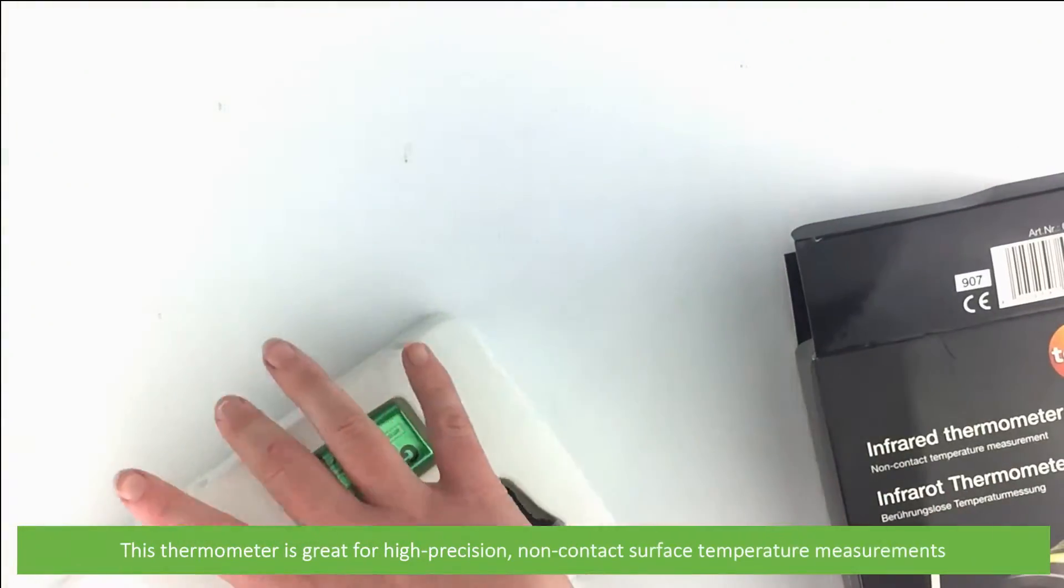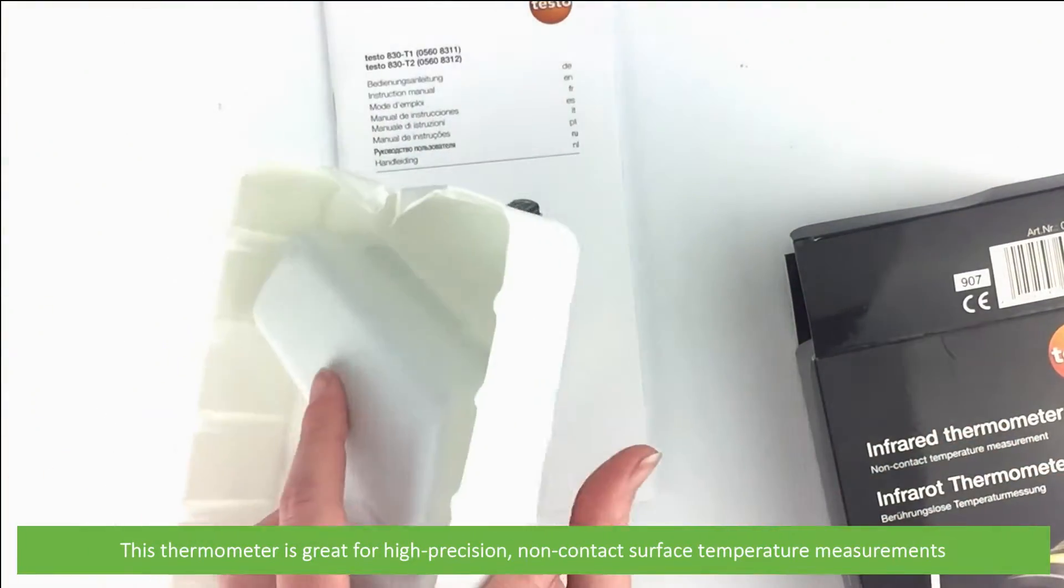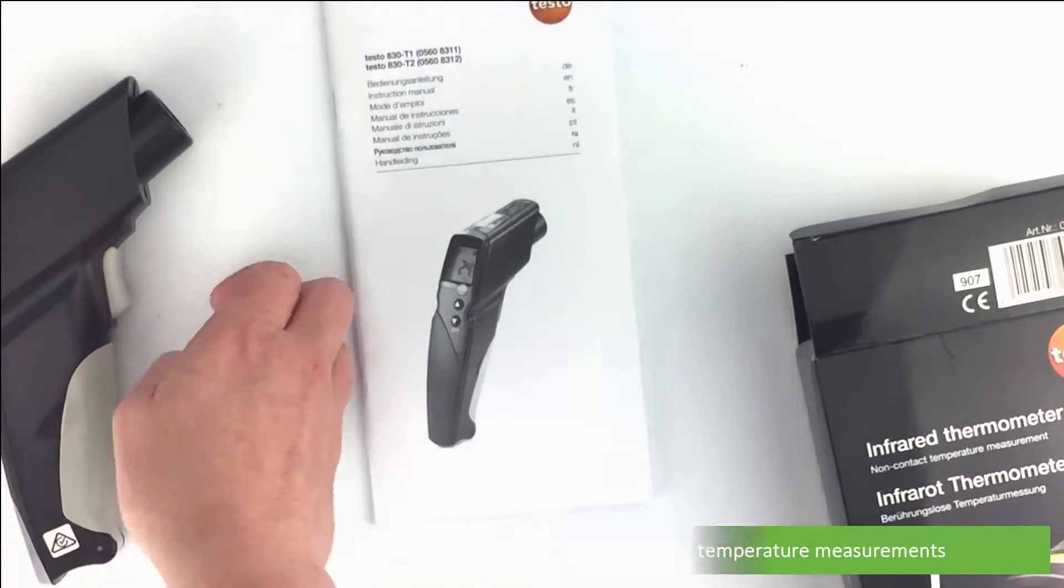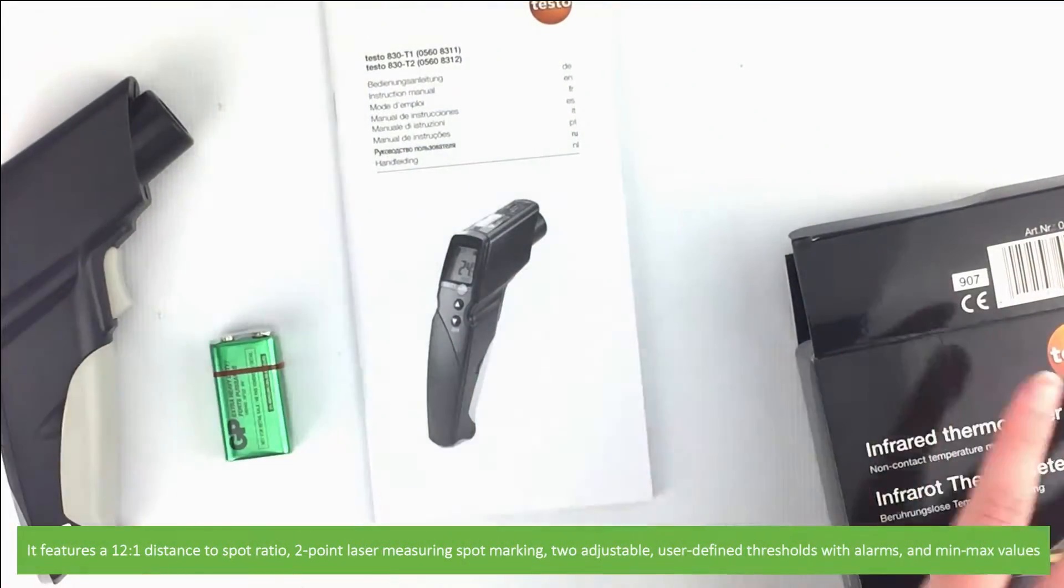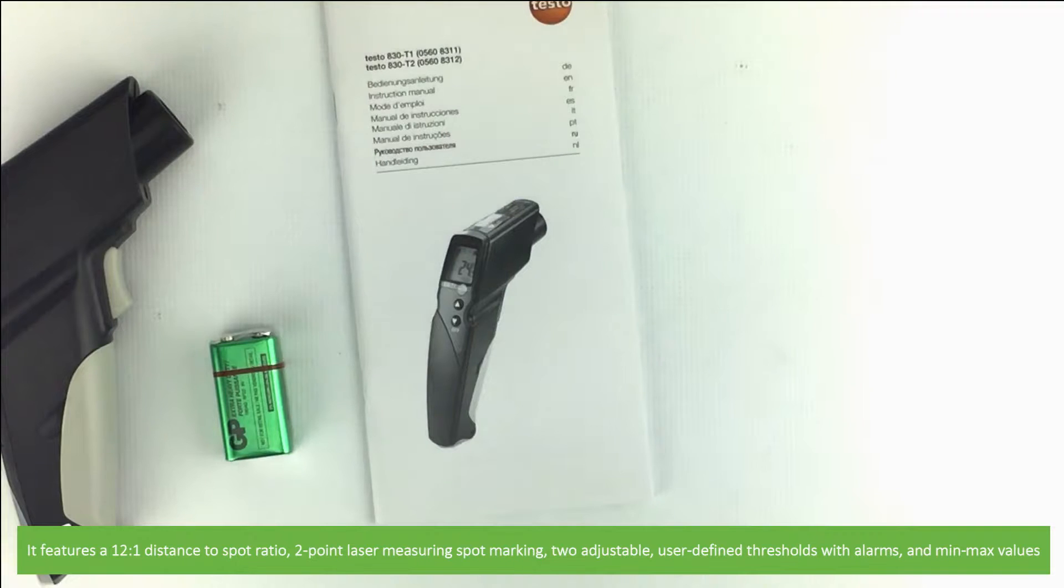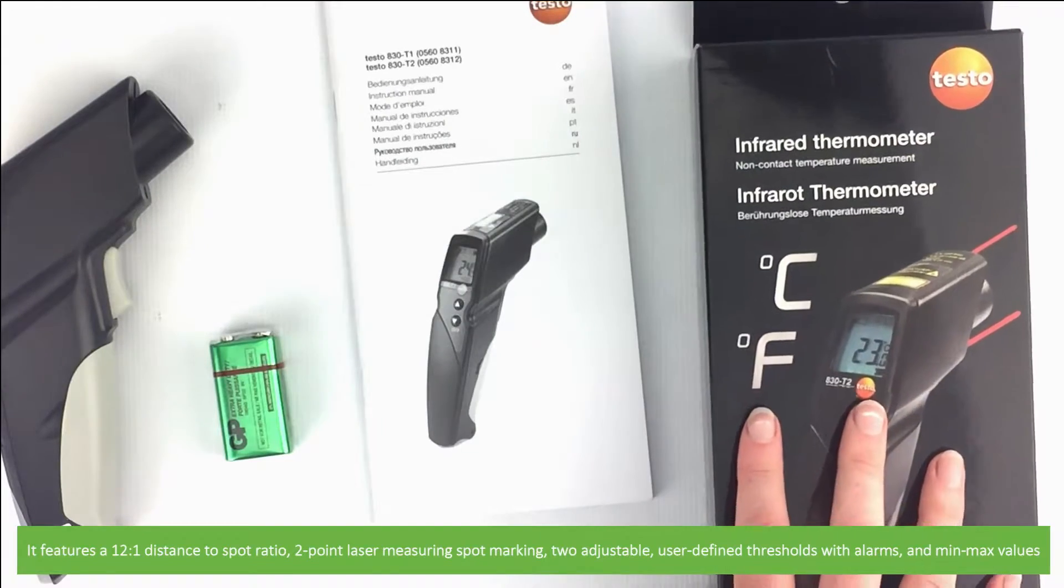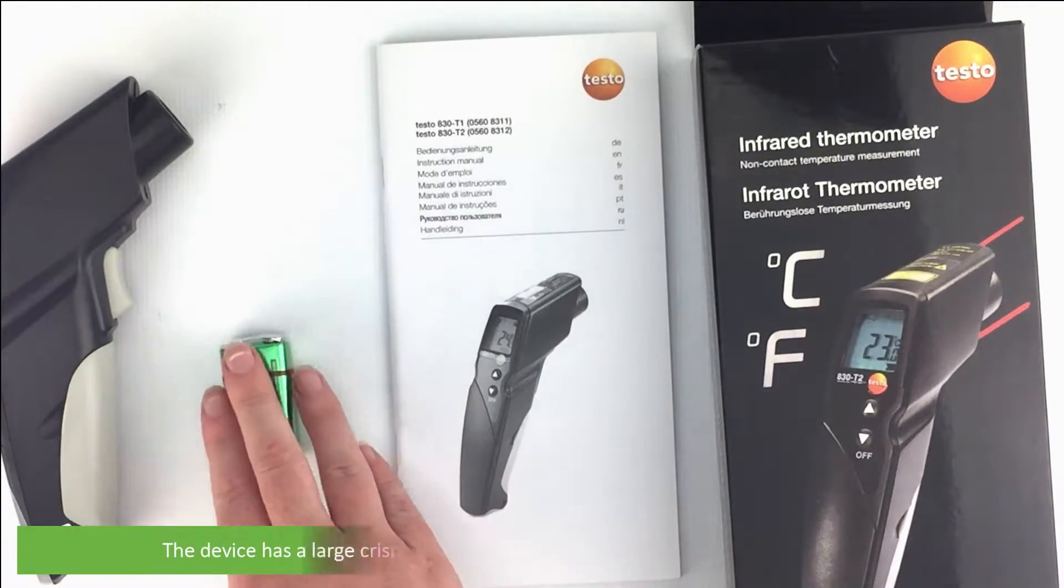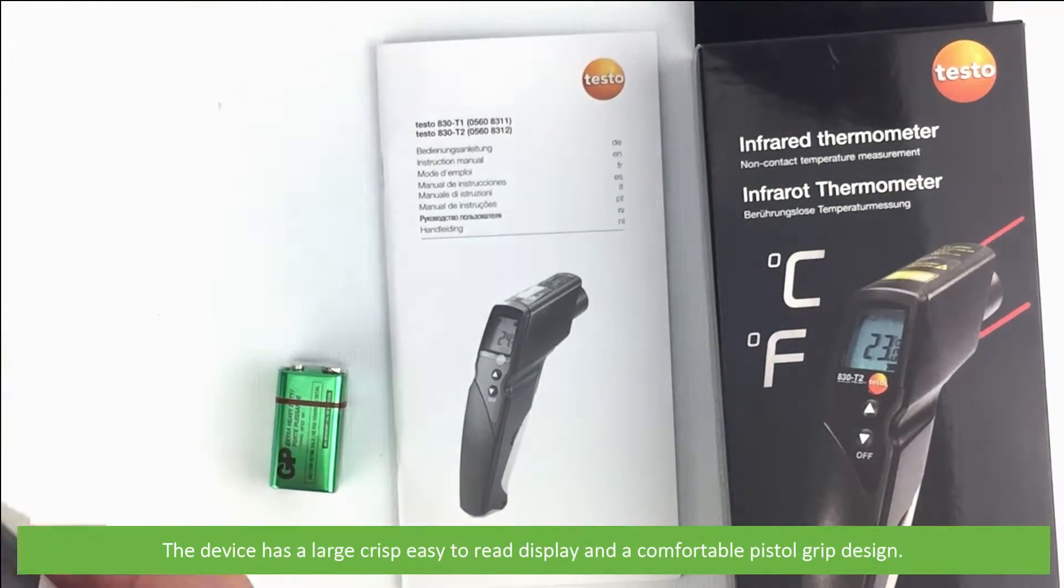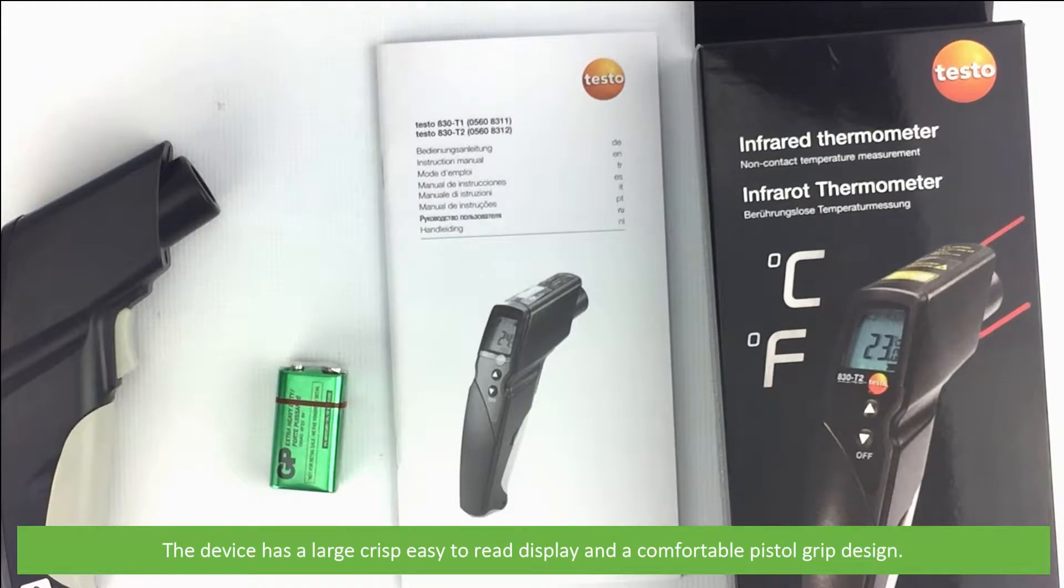This thermometer is great for high precision non-contact surface temperature measurements. It features a 12 to 1 distance to spot ratio, two point laser spot marking, two adjustable user-defined thresholds with alarms and minimum and maximum values. The device has a large crisp easy to read display and a comfortable pistol grip design.